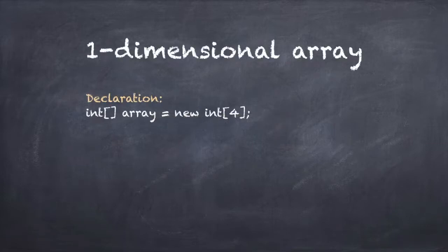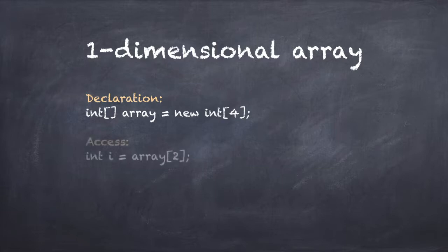The first type is the one-dimensional array that we've seen in the previous lecture. Anything declared with the square array brackets in C# is a one-dimensional array, for example the integer array shown here. You declare the array like this, and you access elements like this.